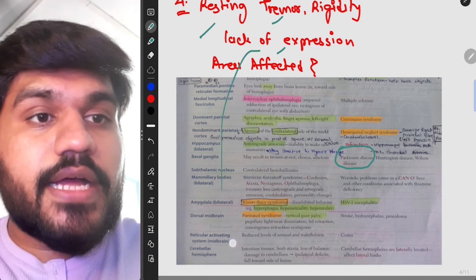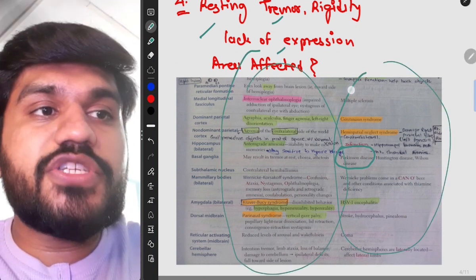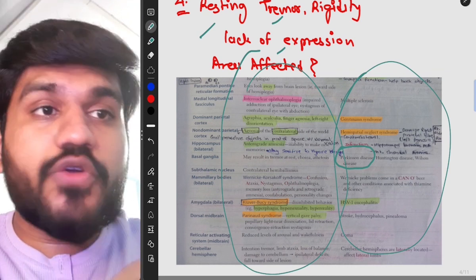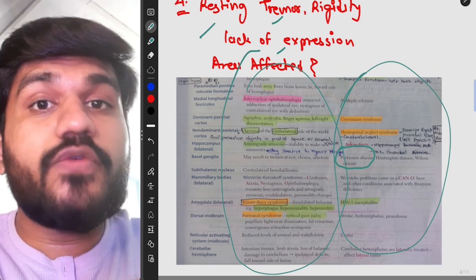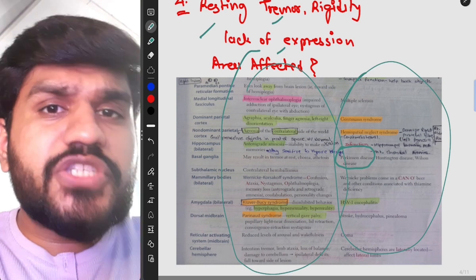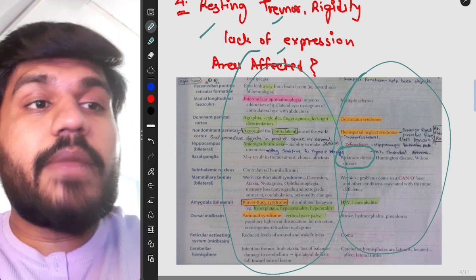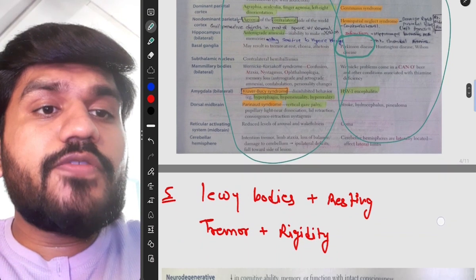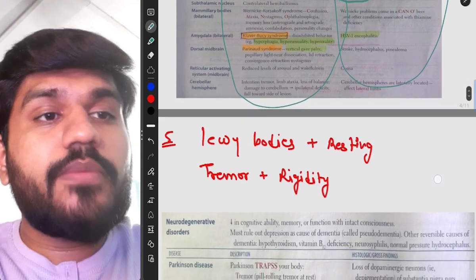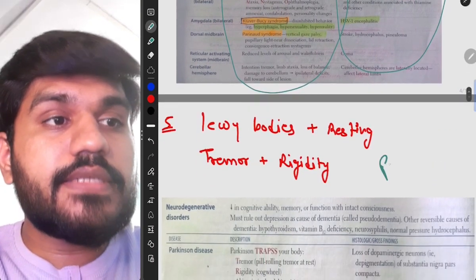And what they do in this page is that they have given all the areas of the brain and from which area disease are originating from and this is really concise. So you can just go over this page and you will have idea of every lesion that is occurring on brain by just reading this page.